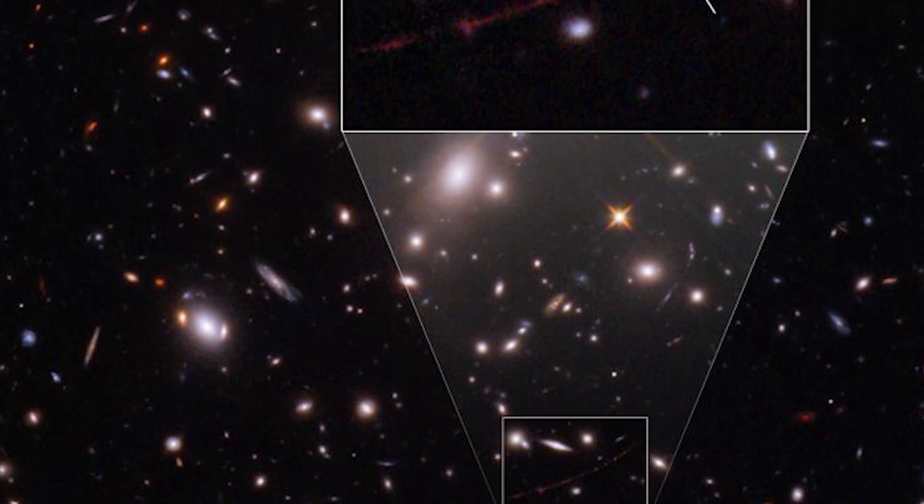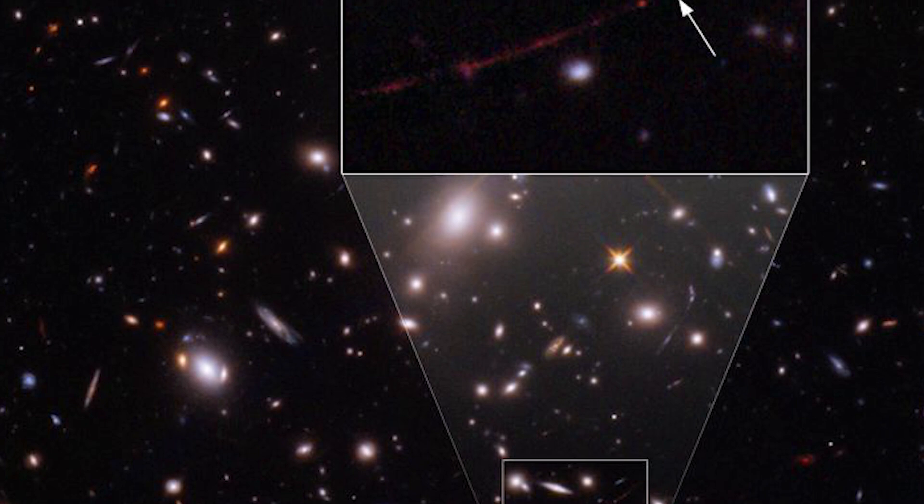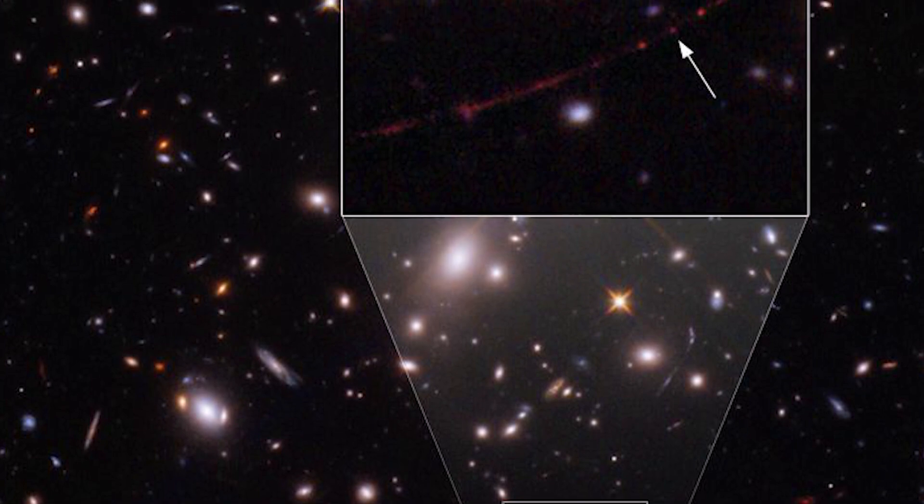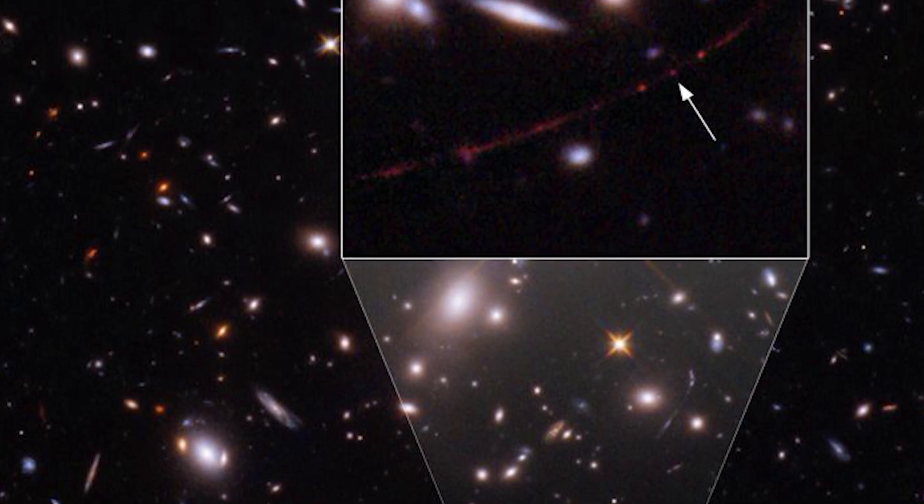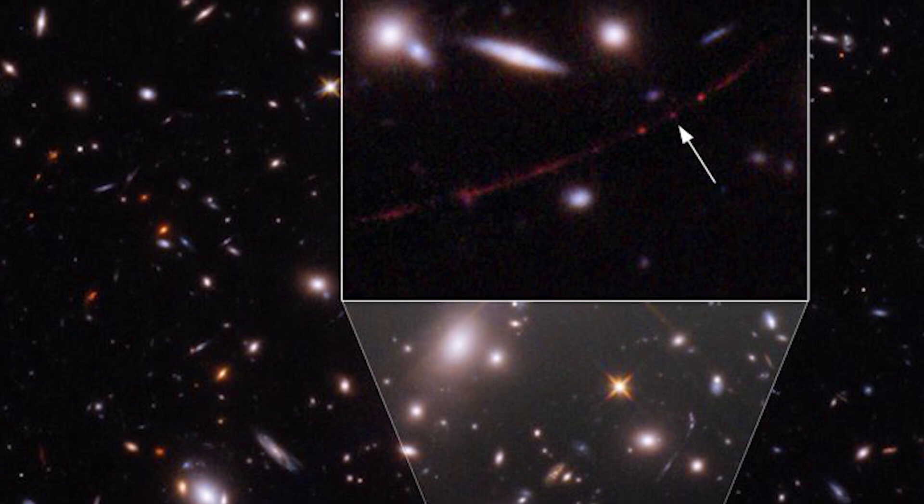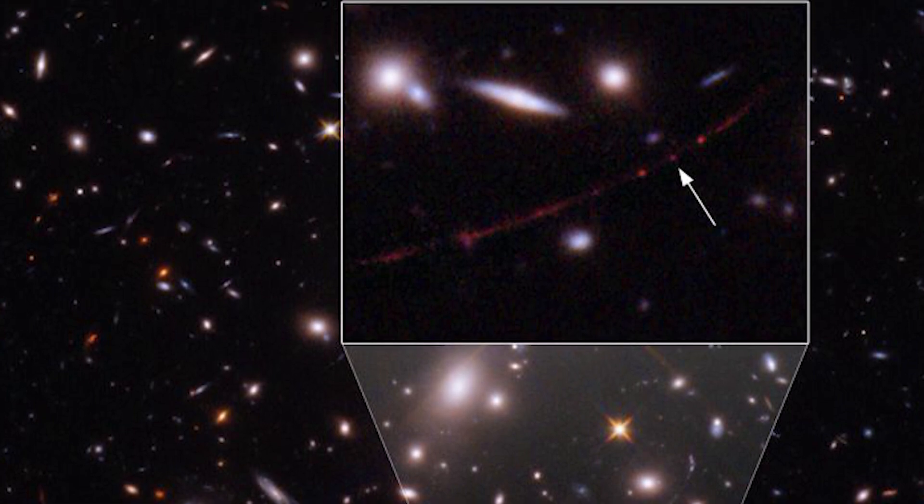Erindel, which means dawn star or rising light, lives in the Sunrise Arc galaxy. Its light has been stretched into a long arc by the gravity of the galaxy cluster closer to Earth, a phenomenon known as gravitational lensing.